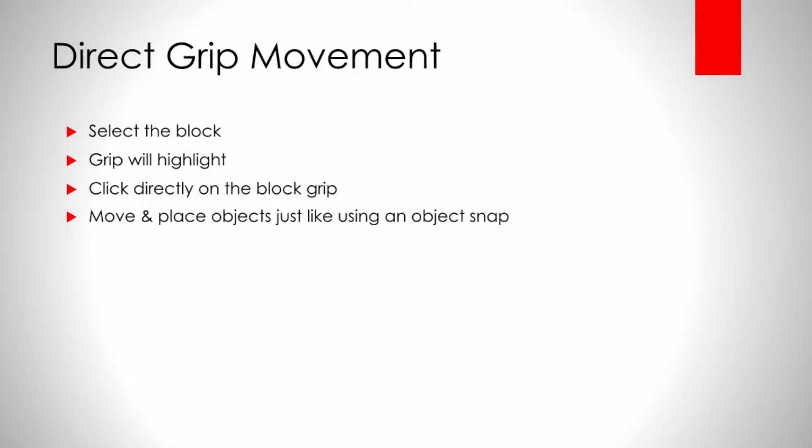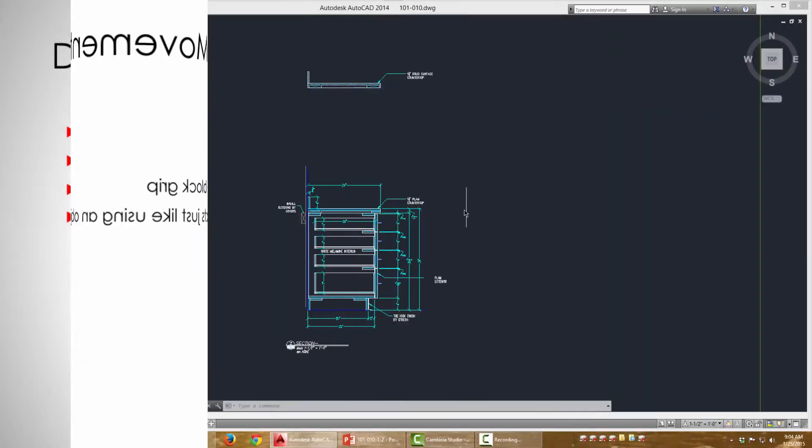Now for direct grip movement, what we're talking about is certain objects — blocks, certain geometry like lines, and even text — that have grips which can be selected and just moved. Let me demonstrate.